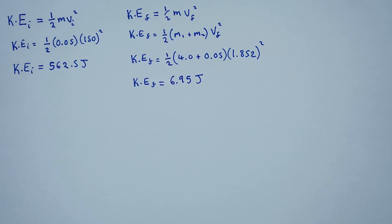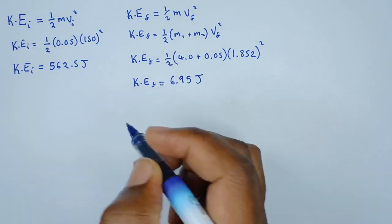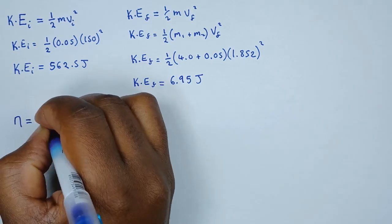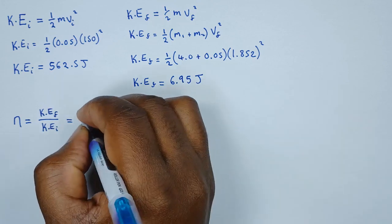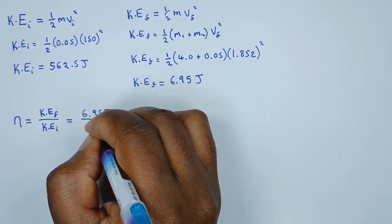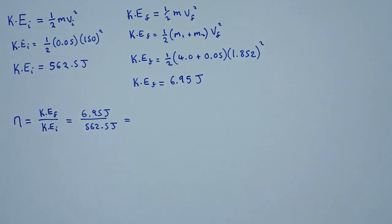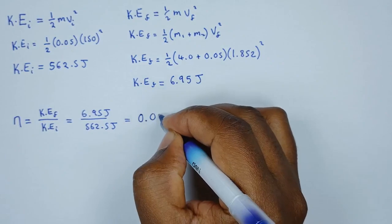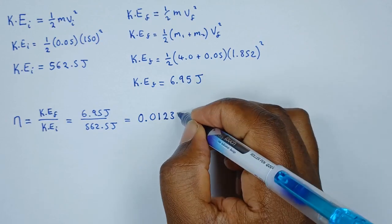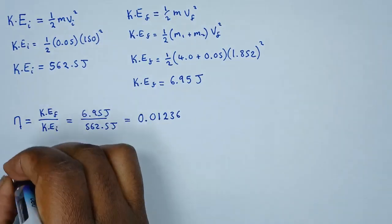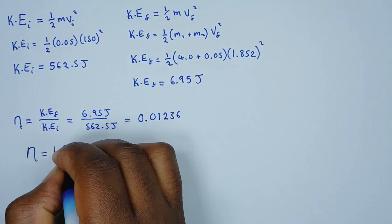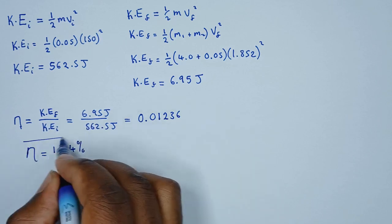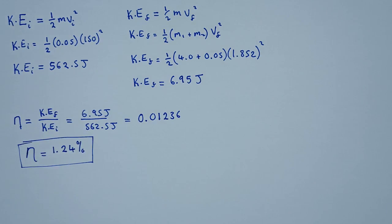To find the fraction of energy transferred, we use η = KE_final / KE_initial. The final kinetic energy was 6.95 joules and the initial was 562.5 joules, giving us 0.0123. As a percentage, we multiply by 100 to get 1.24%. This is how much kinetic energy was transferred. I hope that makes sense — please feel free to drop a comment if you have a question.